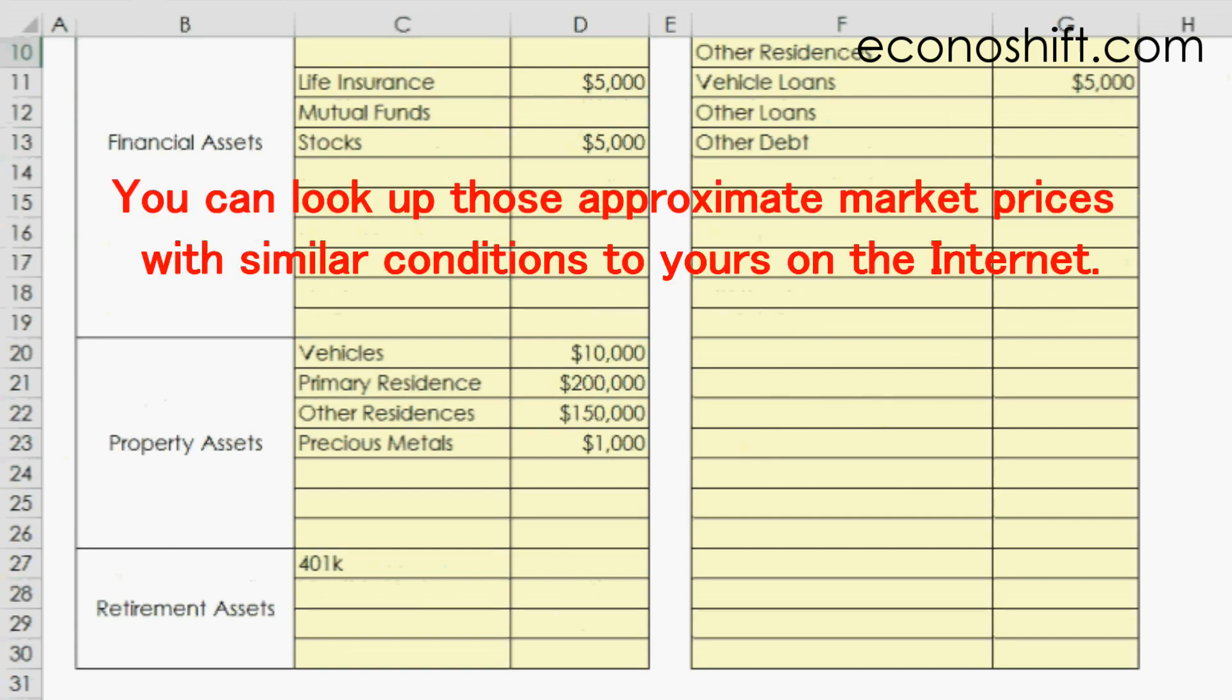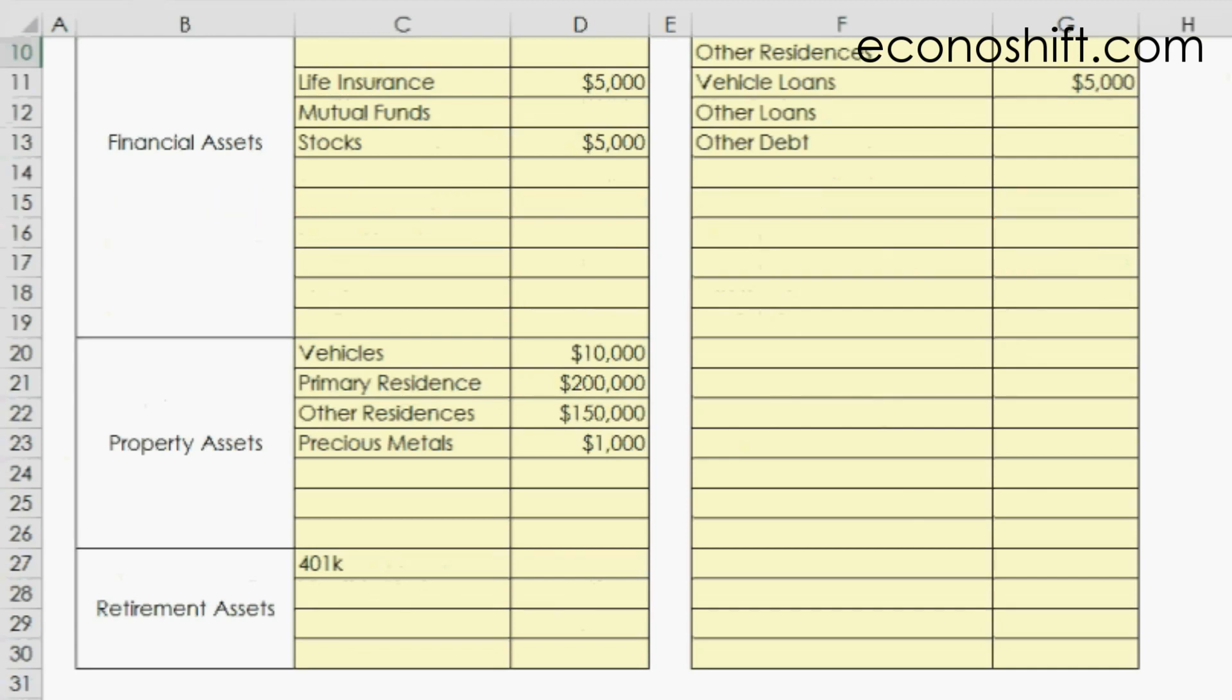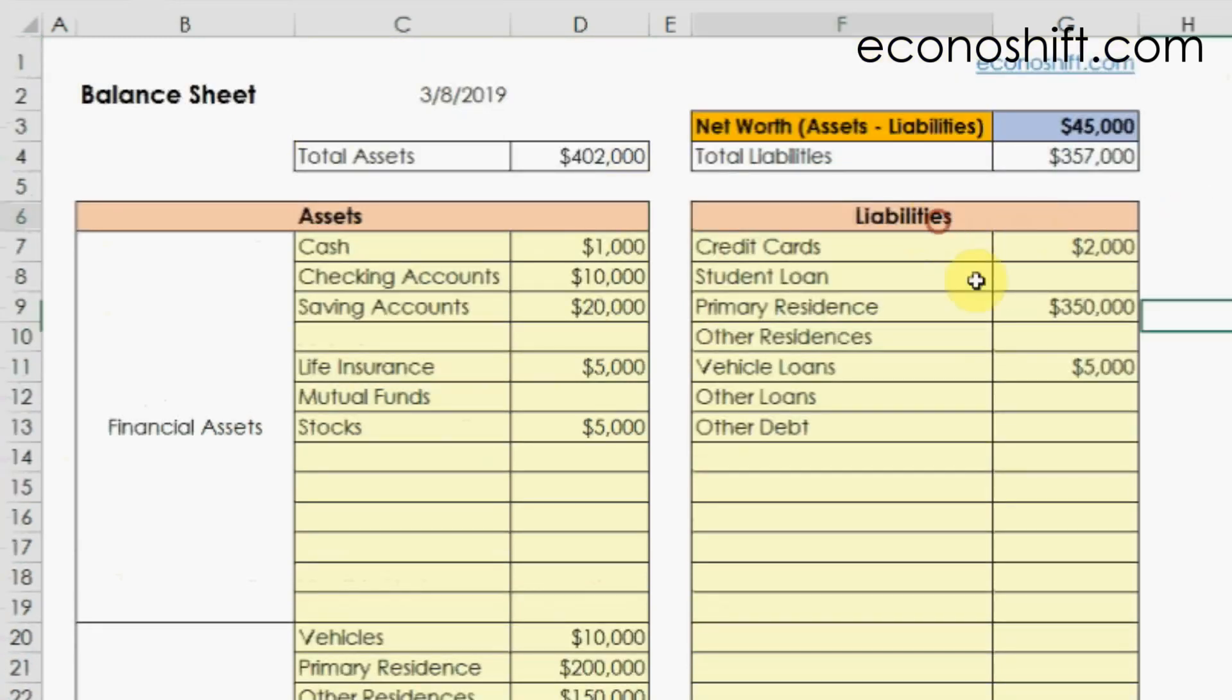These days, you can look up those approximate market prices with similar conditions to yours on the internet. In the liabilities column on the right side, input all current balances of credit cards, various loans, and other current debt balances.